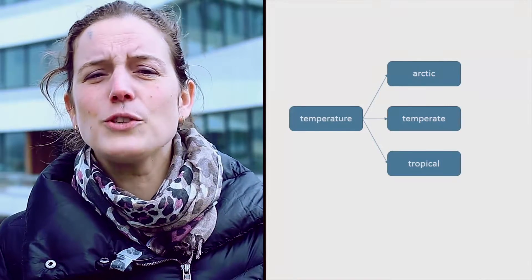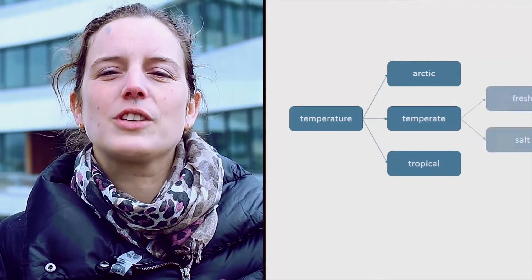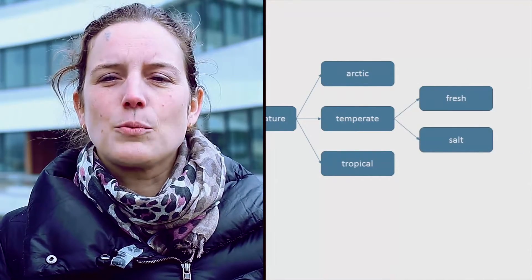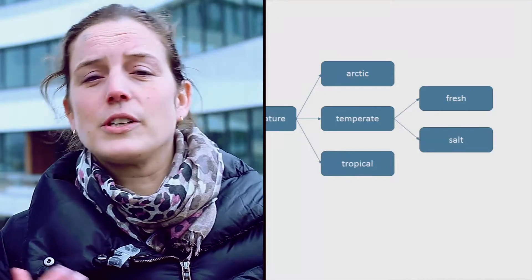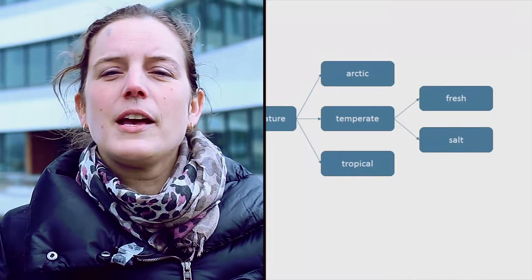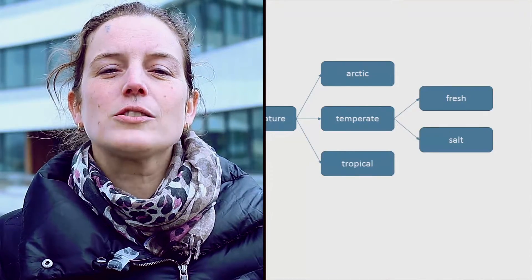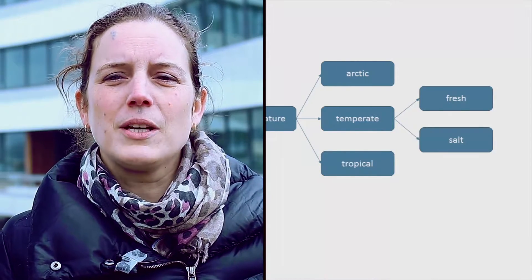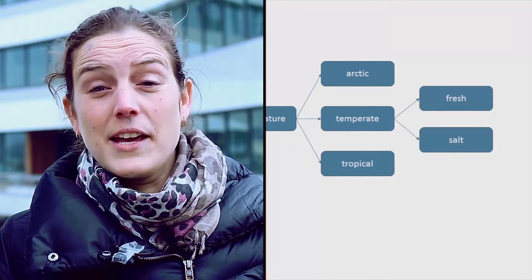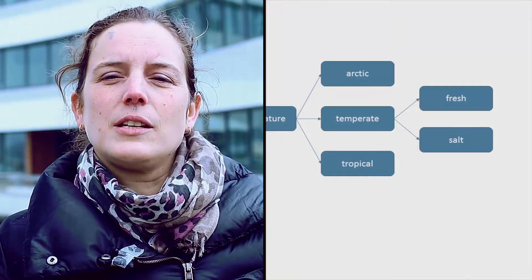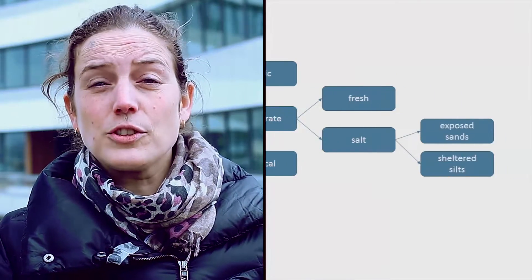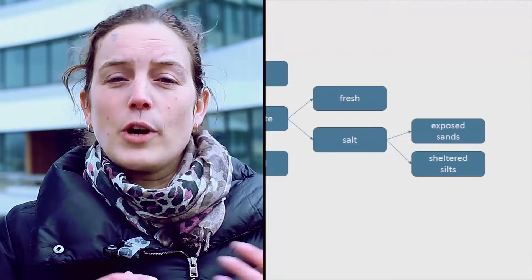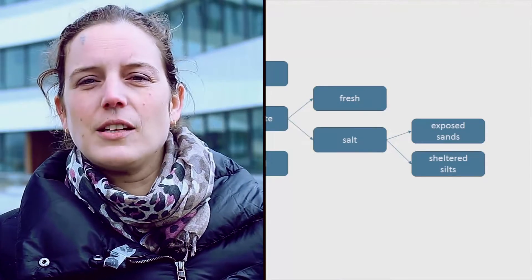If we zoom in to a more detailed scale, the main determinant of ecosystem type is whether we are in fresh or in salt water, as many species do not tolerate high salinity levels for long periods of time. Then, the most important factor is whether the system is sheltered and dominated by fine sediments, or exposed and dominated by sandy sediments.